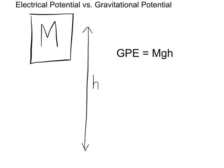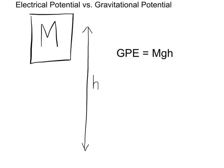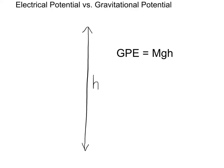Let me re-emphasize this: the gravitational potential energy depends on the mass of the object. What would happen if we removed the mass entirely? What's the new gravitational potential energy? Well, there's no mass there, so the gravitational potential energy is zero.